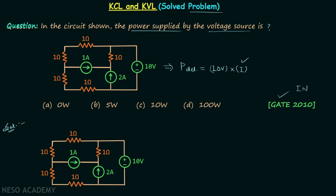In the first step we will assign the direction to the current I. Current I will leave the positive terminal and enter the negative terminal, because power is getting delivered — and when power is delivered, the current leaves the positive terminal and enters the negative terminal. We already know this point.